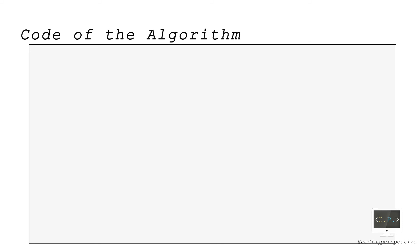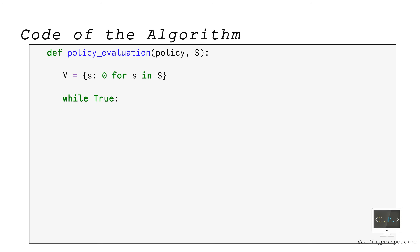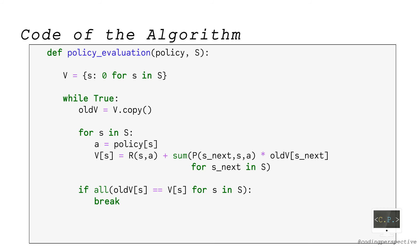To complete the implementation, I will now show how to define the policy_evaluation and policy_improvement functions. In the policy_evaluation function, the idea is to update the value functions under a given policy until they converge. We first initialize the value functions as a dictionary called V. Then we have a while loop with a true condition. In this loop, we first create a copy of V called old_V, which we use while checking convergence. Then we update V for each state S as shown — this is the expression from the policy evaluation step. Lastly, we return V as output.